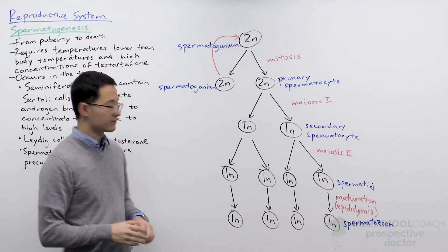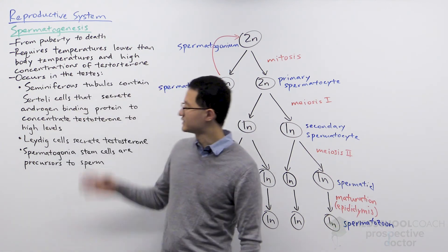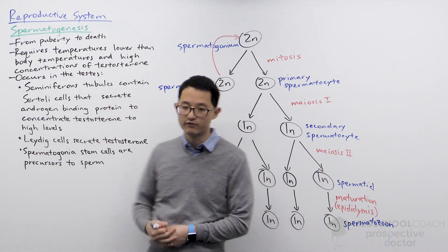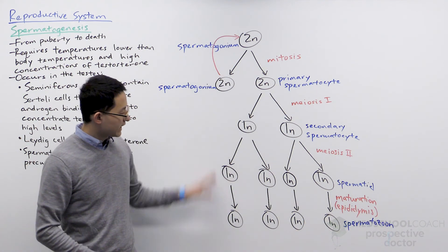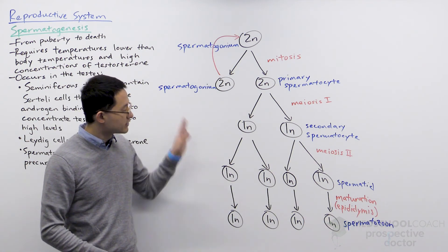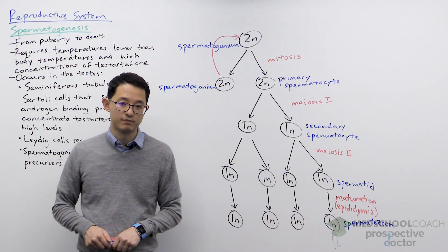So this is the process of spermatogenesis, describing the key processes involved as well as looking at how meiosis and mitosis are involved in the production of sperm.